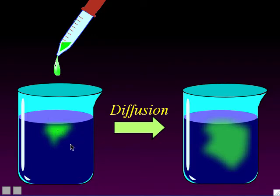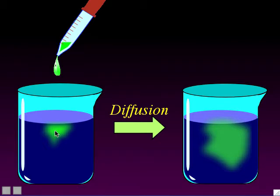If you watched the high concentration zone of the green solute molecules, you would see them spreading out. After a few minutes it would look more evenly distributed — that's called diffusion. Diffusion is defined as the movement of solute molecules from their area of high concentration to their area of low concentration. Another way of saying it: solutes spread out, or solutes move down their concentration gradient, meaning from the high concentration area to the low concentration area.